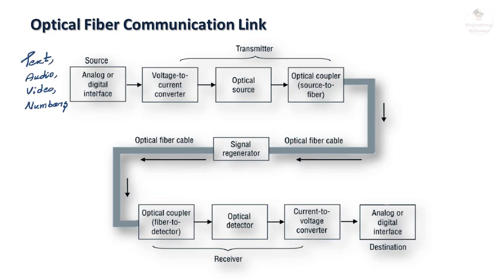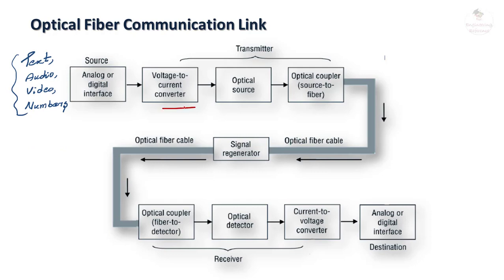The source information may be in non-electrical form — physical form such as voice, audio, video, numbers, or text. A transducer converts these physical quantities into an electrical signal, which can be analog or digital. An analog or digital interface is used; if the signal is analog but the channel supports only digital sequences, the analog signal is converted into digital form. There is also a voltage-to-current converter working as an electrical interface between the information source and the optical source.